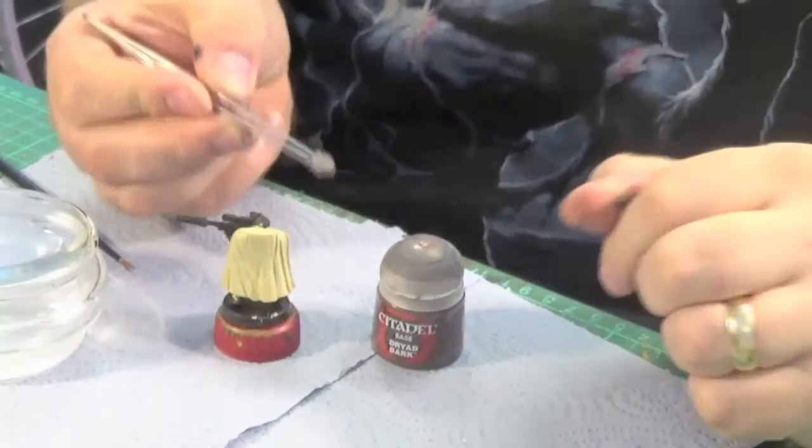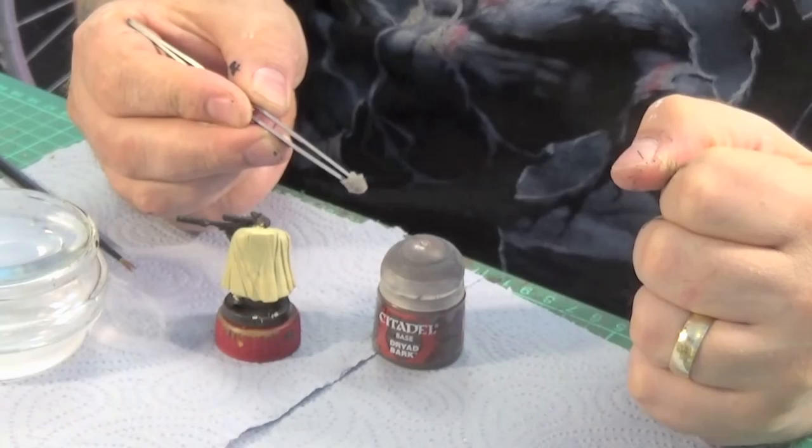So here we are once again with another painting tutorial. This time it's a desert camo cloak starting with Ushabti Bone.